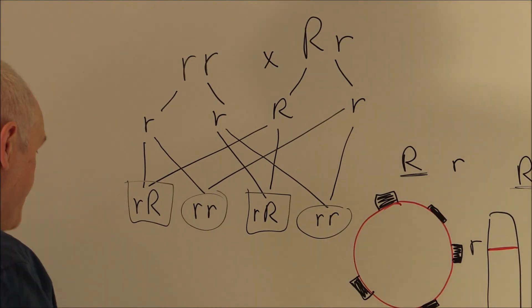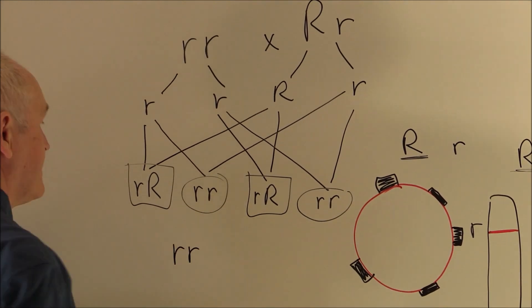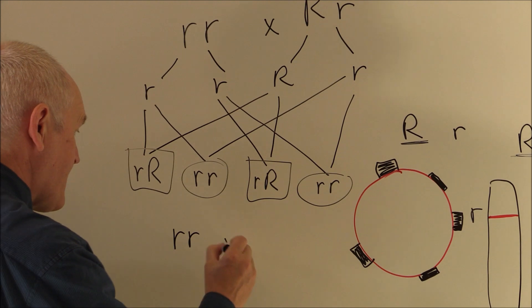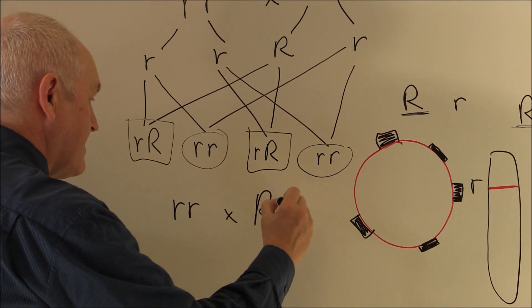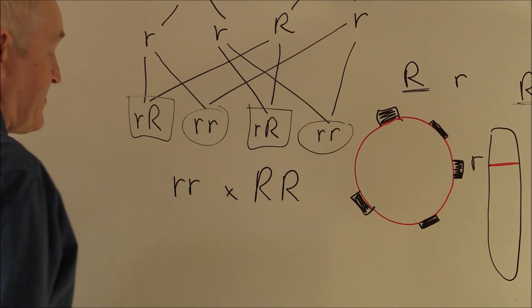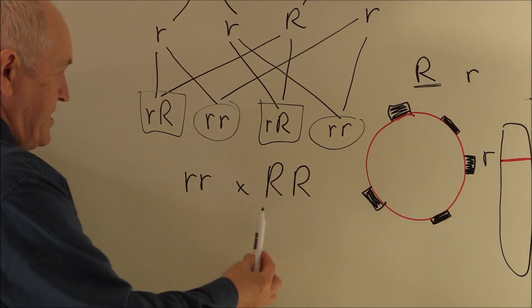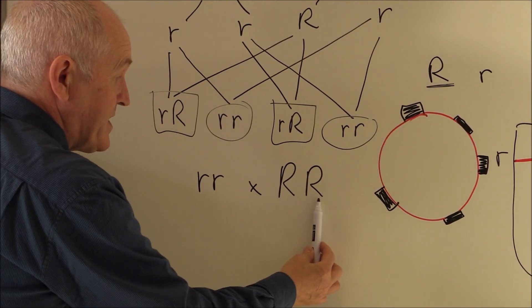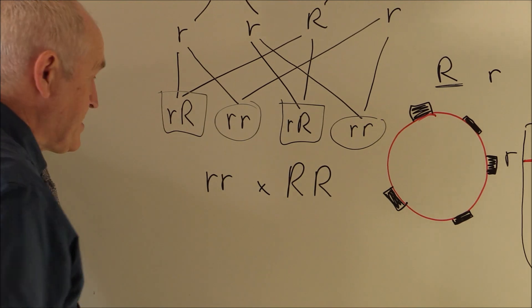Now, alternatively, we know the mother is going to be Rhesus negative. The father could be homozygous for the trait, with two Rhesus positive genes. Phenotypically, the father is still, of course, Rhesus positive.